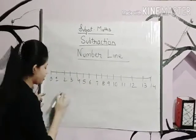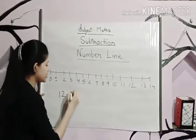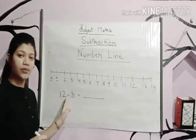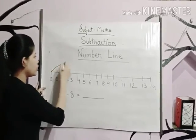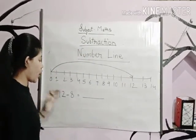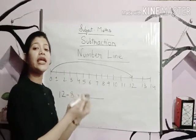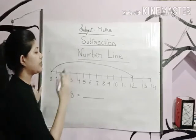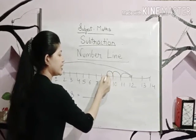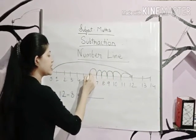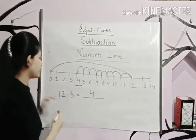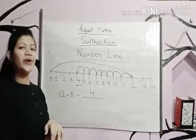A line that shows numbers is known as a number line. If I gave you a number — twelve minus eight is equal to dash — first we will go to the number twelve on the number line. Then, how much we have to subtract? Eight. So we come eight steps back from twelve: one, two, three, four, five, six, seven, eight. We land on four. So twelve minus eight is equal to four.